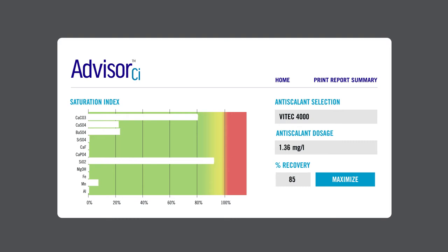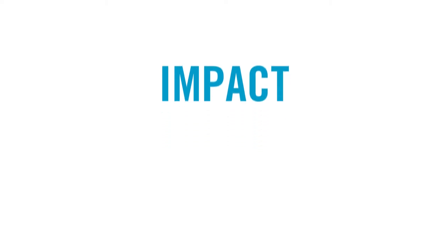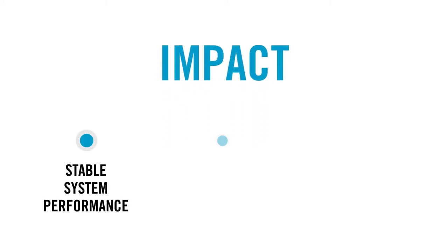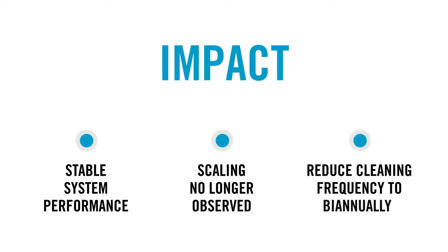Vitec 4000 was chosen to inhibit both silica and calcium carbonate. After Vitec 4000 was put online, the site achieved stable system performance. Scaling was no longer observed in the last stage of the system. As a result, the site was able to reduce their cleaning frequency to bi-annually for front-end organic fouling.